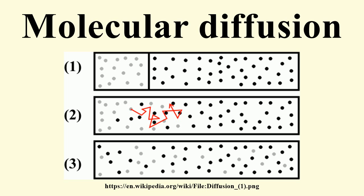The result of diffusion is a gradual mixing of material such that the distribution of molecules is uniform. Since the molecules are still in motion but an equilibrium has been established, the end result of molecular diffusion is called a dynamic equilibrium.